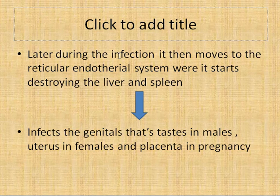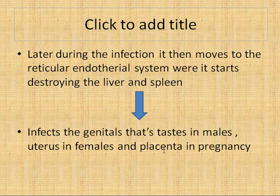Later during the infection they will move to the reticuloendothelial system, where they will start destroying the spleen and the liver. Further, they will infect the genitals — the testes in males — whereas in females it will be the uterus, and in the case of pregnancy it will be the placenta of the fetus growing in the mother's womb.